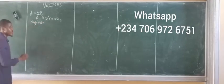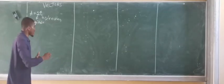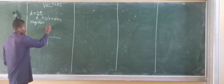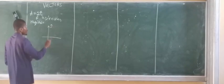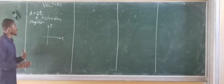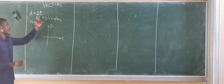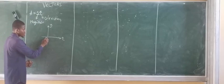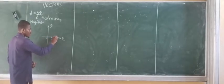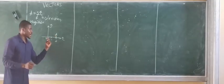So if I want to represent this on a graph or in space, on a number line, this direction represents the J direction of the vectors, while this direction represents the I direction of the vectors. So vector A has a magnitude of 2 in the I direction — if this is 0, here is 1, and here is 2, then vector A is found at this position with a magnitude of 2 in the I direction.